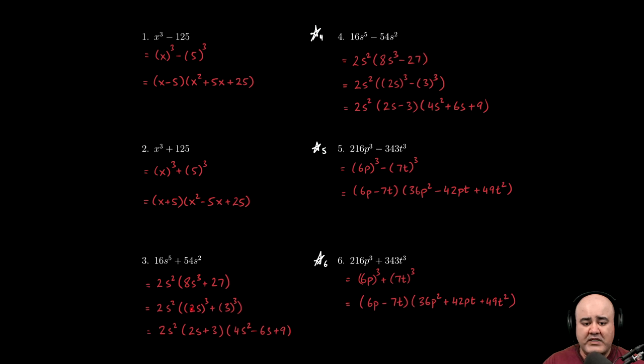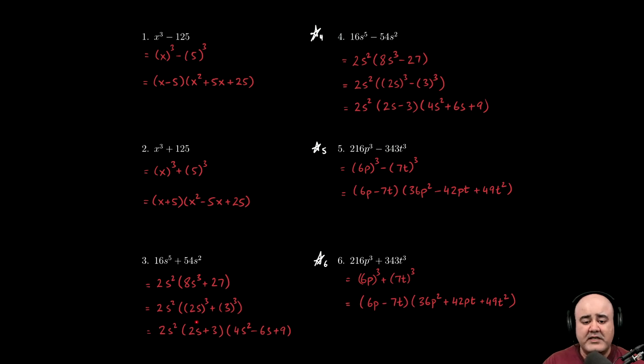Then at this stage, and that was just a matter of applying the formula that we've memorized hopefully, so the 2s squared, the GCF doesn't vanish, it comes along for the ride. A plus b, so 2s plus 3 times the quantity a squared. Now if I square 2s, 2s times 2s will give us 4s squared.